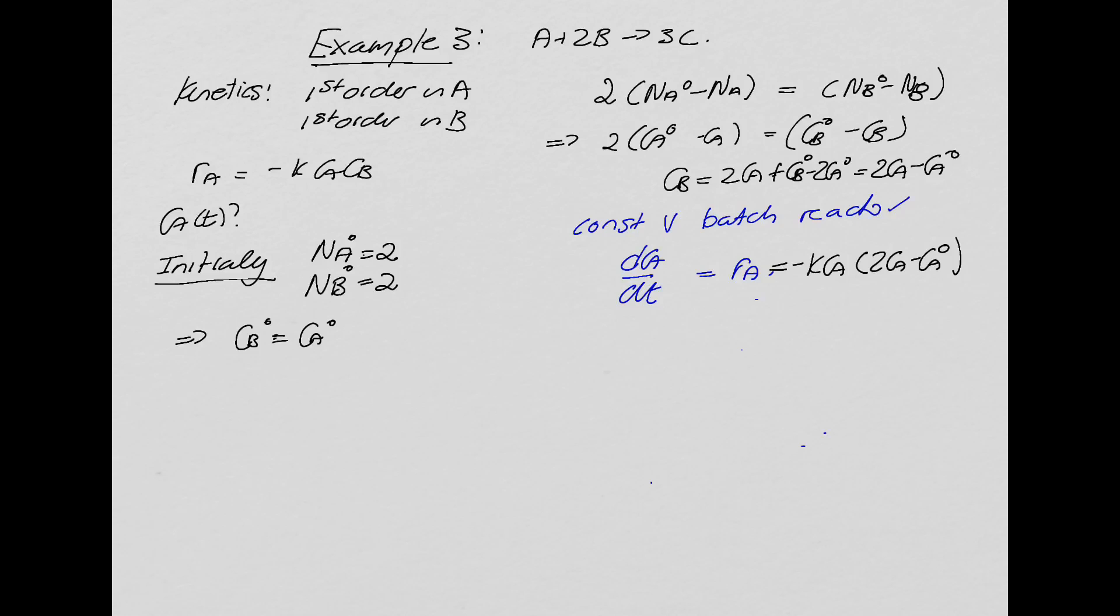So what we do is we combine the Ca terms together. That would give us dCa over Ca times (2 Ca minus Ca0) is equal to minus K dt. Now, how do we integrate that left-hand term? Now, one of the other problems I find that people struggle with in reactors is all the maths you've learned up to now, you actually need to know. You need to know your mass balances, energy balances, and the maths. And unfortunately, if you're struggling with one of those, you really have to put some effort in, go back to your notes, read up how to do it.